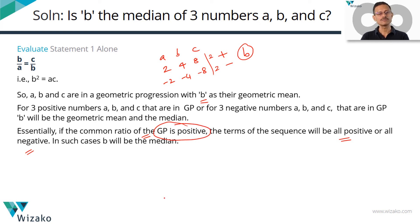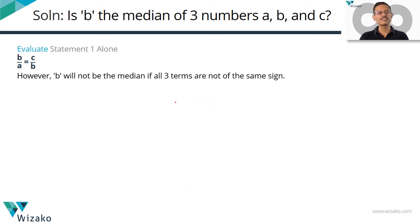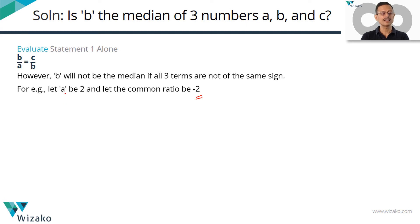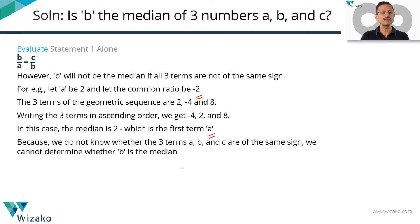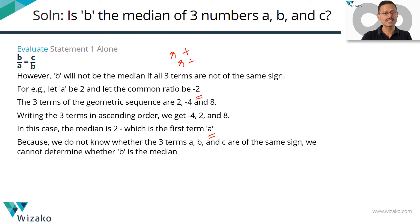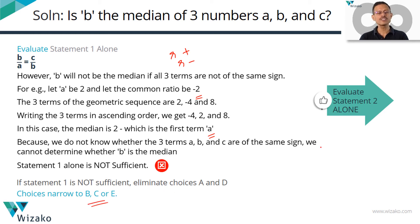When will B not be the median? When the common ratio is negative — that gives a mix of signs. With A = 2 and R = -2, B = -4 and C = 8, the median is A. If the common ratio is negative, B is not the median. From statement 1 alone — B/A = C/B — we don't know whether R is positive or negative. So statement 1 is not sufficient. Rule out choices A and D; we're down to B, C, or E. Let's look at statement 2 alone.